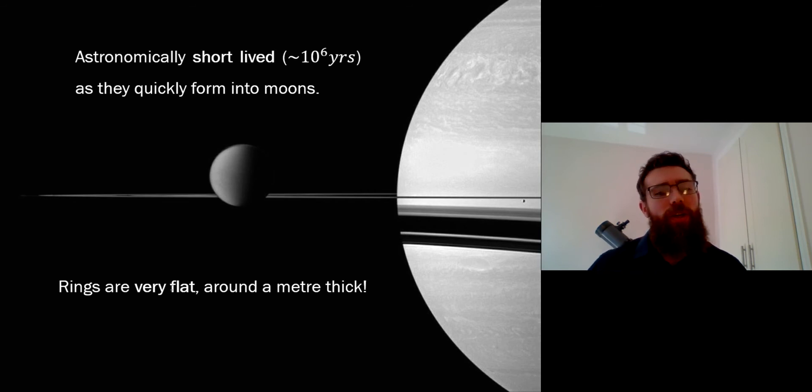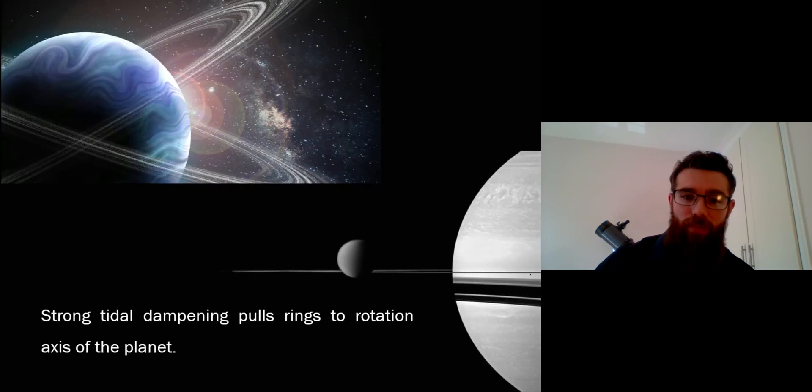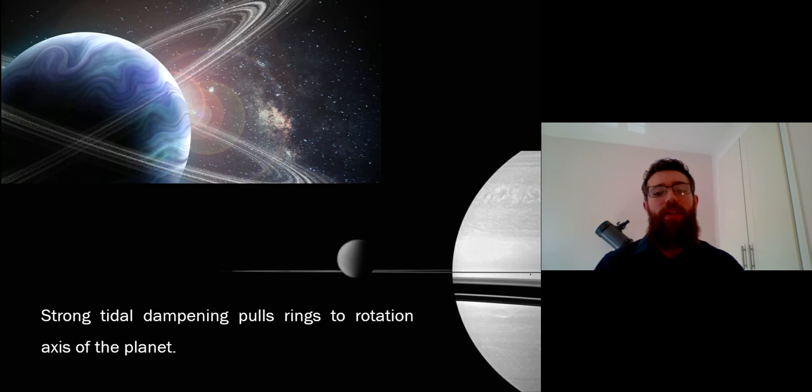They also don't particularly last very long. They very quickly will form into moons. Over time the edge of the ring system will clump into a moon and then it will move away. This is what's formed a lot of the moons around Jupiter, Saturn, and all the other planets really. These rings will very quickly form into moons.